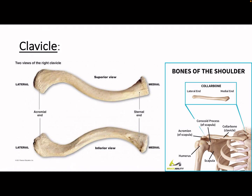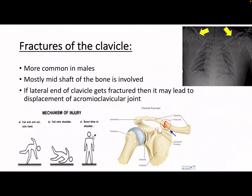Now let's study about the fractures. Clavicle fractures are more common in males, and mostly the mid-shaft of the bone is involved. The mid-shaft is where the two parts make a junction, and it is the weakest link of the entire bone. So when any trauma or injury occurs, this area is damaged. If the lateral end is fractured, then the acromioclavicular joint gets displaced.